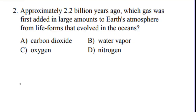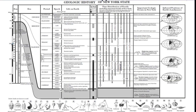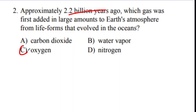Question two: approximately 2.2 billion years ago, which gas was added to Earth's atmosphere from life forms that evolved in the oceans? Going to the reference table at 2.2 billion years ago, the entry reads 'oceanic oxygen begins to enter the atmosphere.' The answer is C — oxygen.